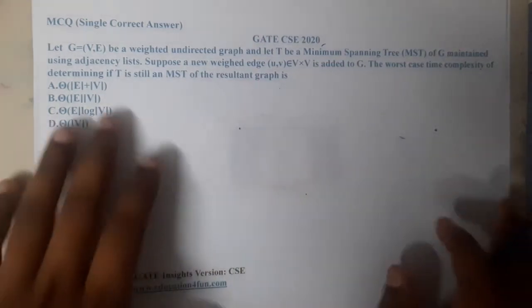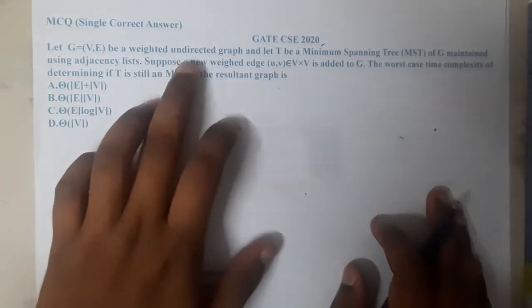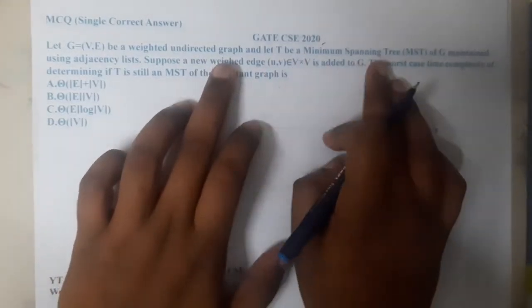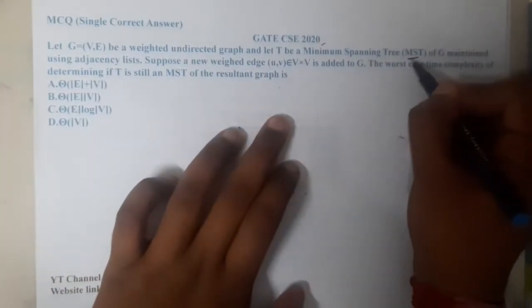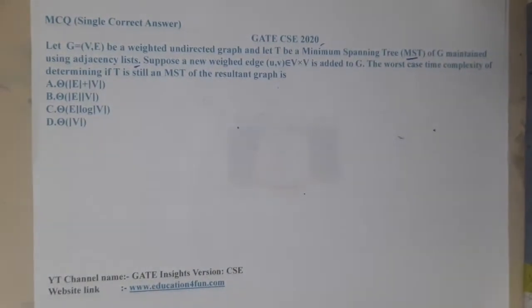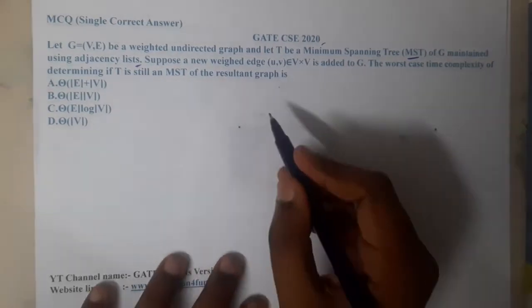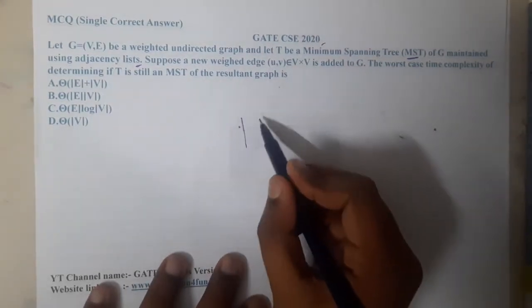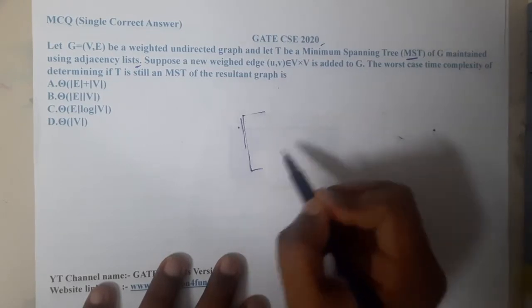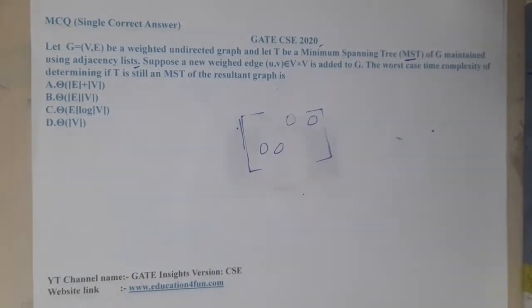The question is: let G(V, E) be a weighted undirected graph and let T be a minimum spanning tree (MST) of G, maintained using an adjacency list. Remember, adjacency list is one of the best ways to store a graph because it does not waste additional space, whereas in a matrix representation many entries will be zeros where no edges exist.